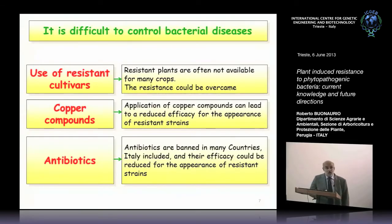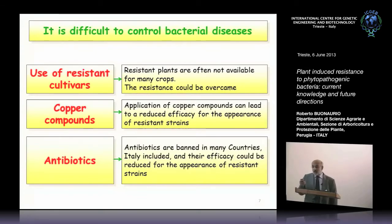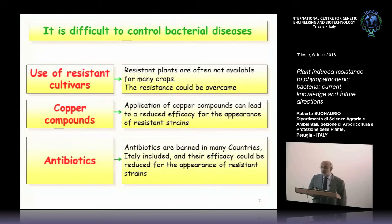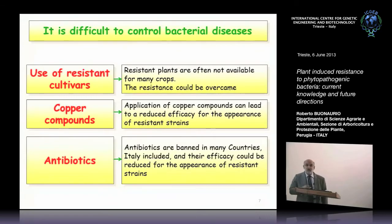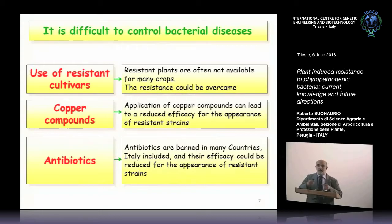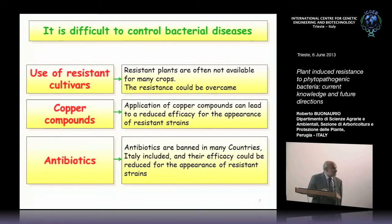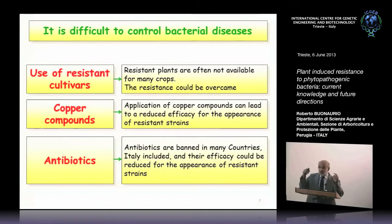Another strategy is chemical control through copper compounds. However, application of copper compounds can lead to reduced efficacy due to the appearance of resistant strains of the bacterium. When the farmer uses repeated applications of a copper compound, it is very easy to have resistant strains, so the efficacy of this compound decreases.